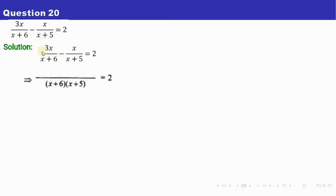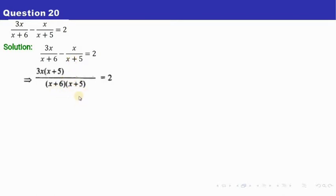This is a fraction and this is also a fraction and you are subtracting two fractions. So first you take the LCM of denominators, as we have taken here. Then you divide the LCM by the denominator, that is x plus 6. So x plus 6 and x plus 6 are cancelled, and only x plus 5 will be left. That number has to be multiplied with this. So we have 3x into x plus 5 here. We have got minus sign, so we will write minus.